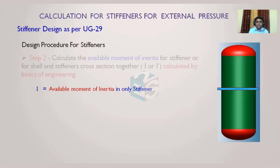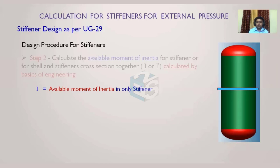A stiffener ring can be any section: an ID/OD ring, an angle section such as ISA 50×50×5, 50×50×6, or 75×75×8 — any Indian Standard Angle or British Standard section. You can use angles, C-channels, or I-beams. Whatever sections are available can be used as a stiffener ring, and their moment of inertia will vary with their cross-section. A square tube has a different moment of inertia than a circular pipe.